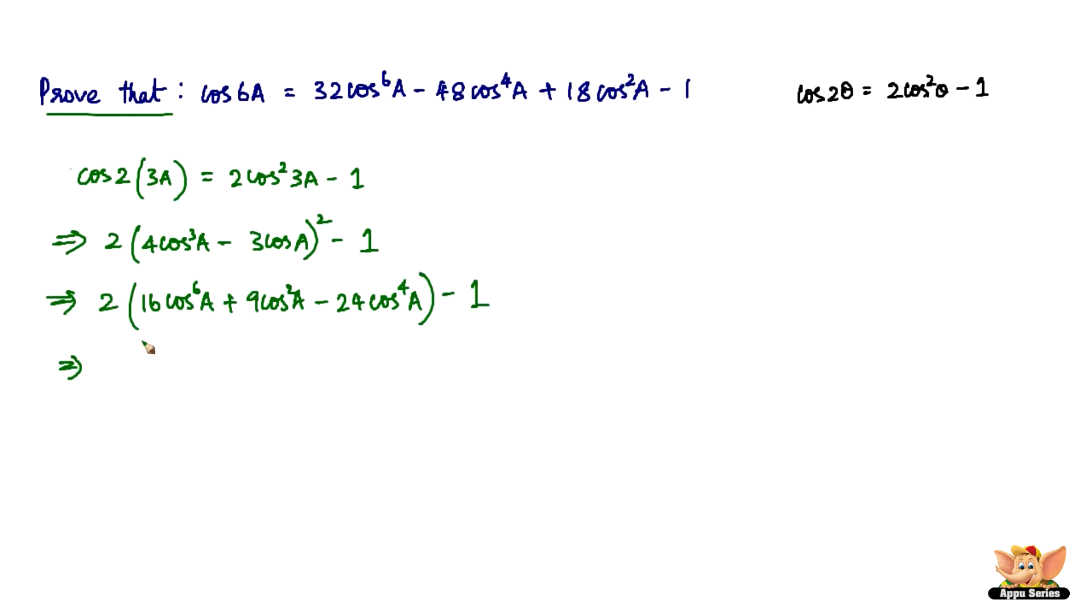Now multiply the 2 inside. You're going to get 2 times 16 is 32 cos⁶a, we've got one already, and then plus 18 cos²a, we've got that as well, and we've got minus 48 cos⁴a and minus 1. All we have to do is just rewrite this in that order. So 32 cos⁶a - 48 cos⁴a + 18 cos²a - 1, which is RHS.